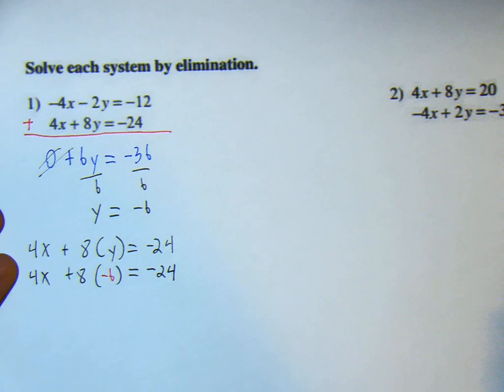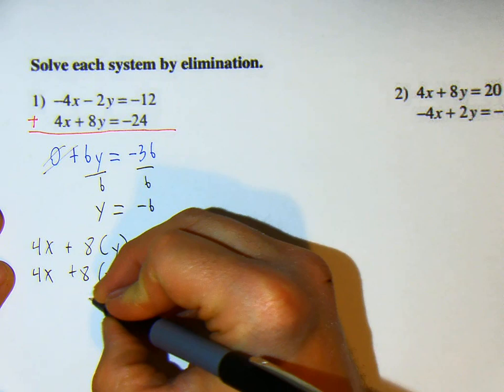All right, next part. Now 8 times 6 is 48, but 8 times negative 6 is negative 48.